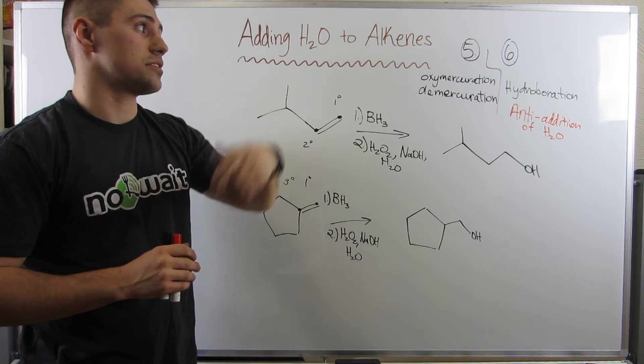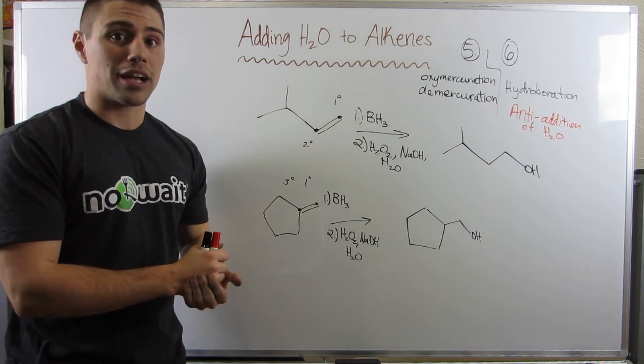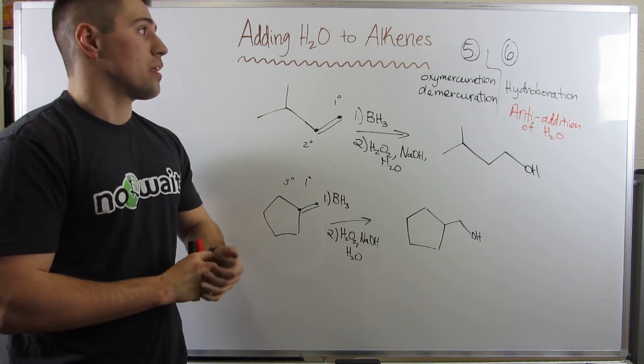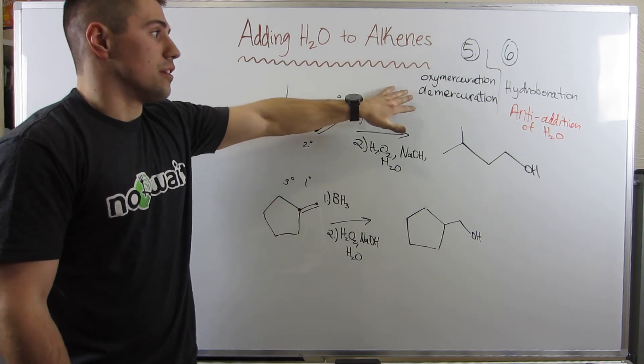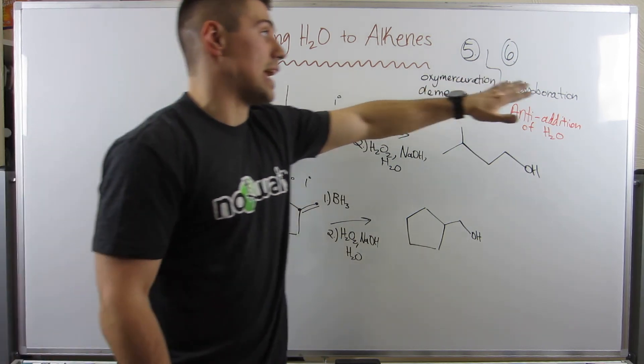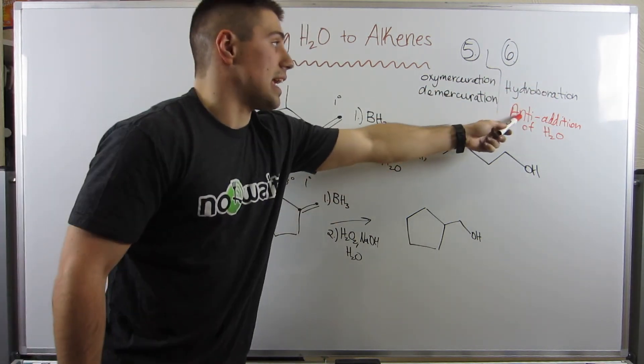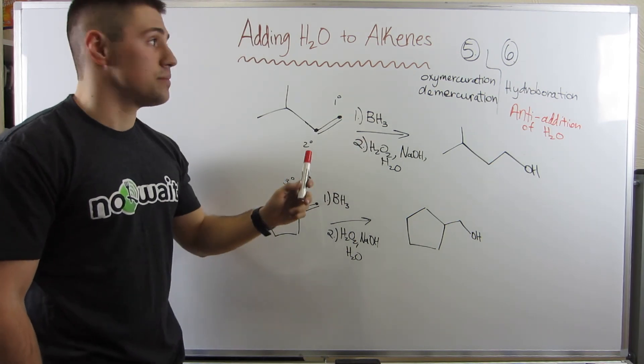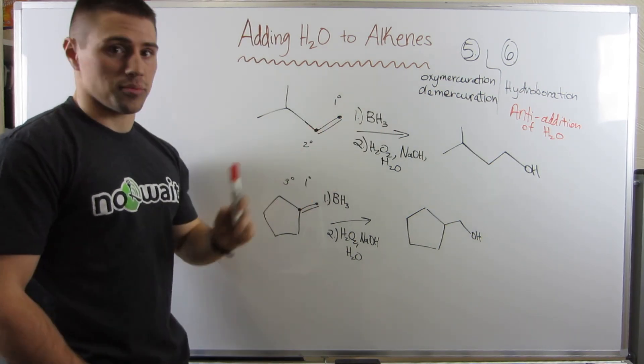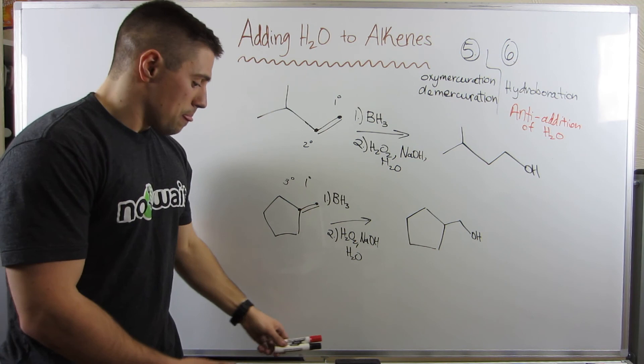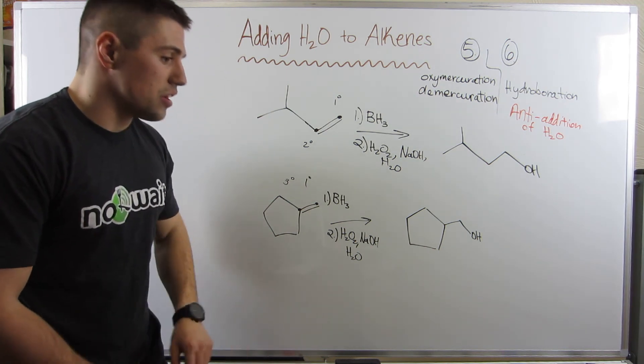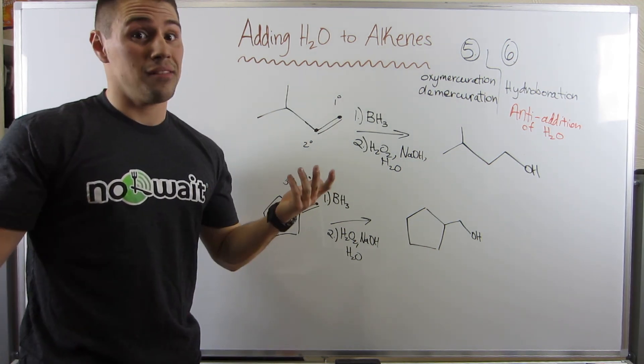Reactions 5 and 6. They're on the completing the reaction worksheet. But just remember, the luxury here is that we don't have any shifts in either case. 6 gives you the anti-product, the least substituted carbon. 5 would give you the more substituted carbon. Okay. Now, we will be moving on to, yet again, more reactions.